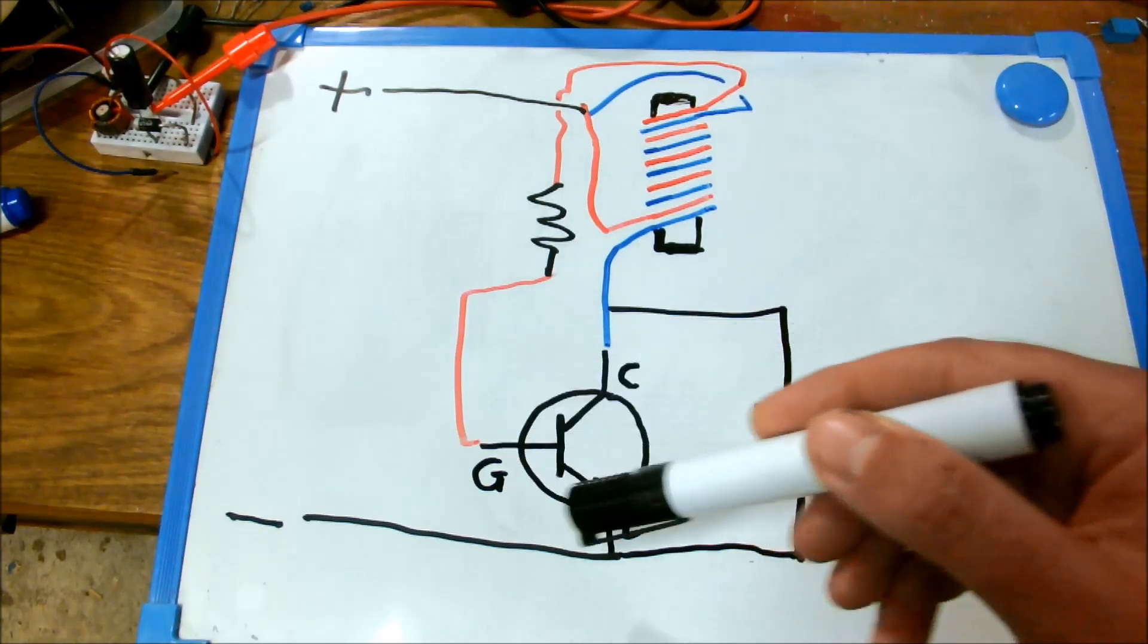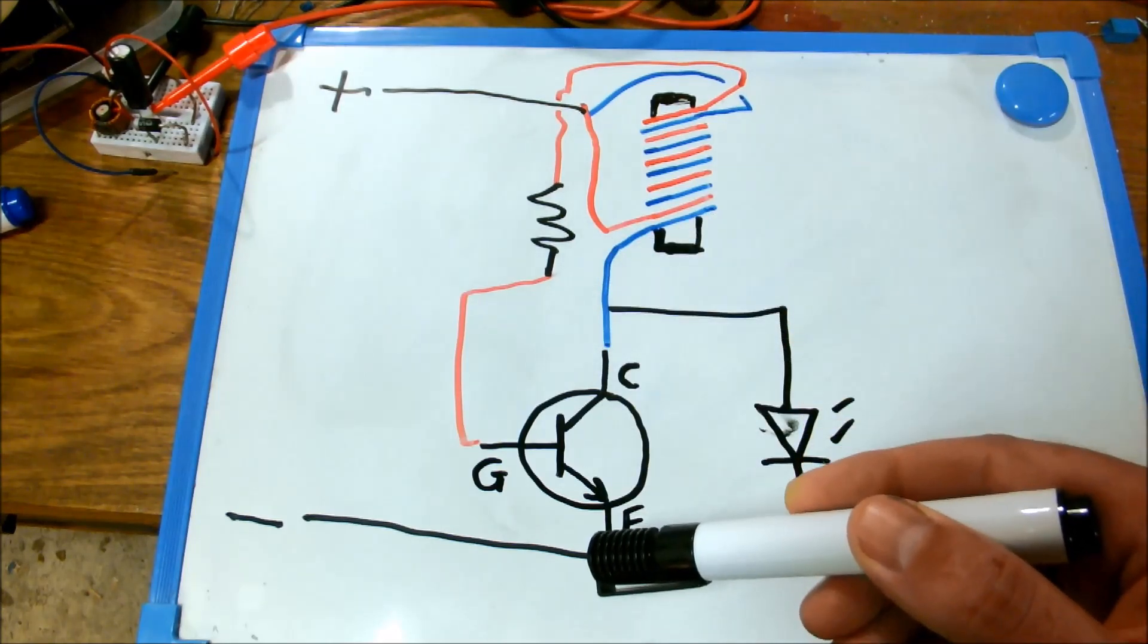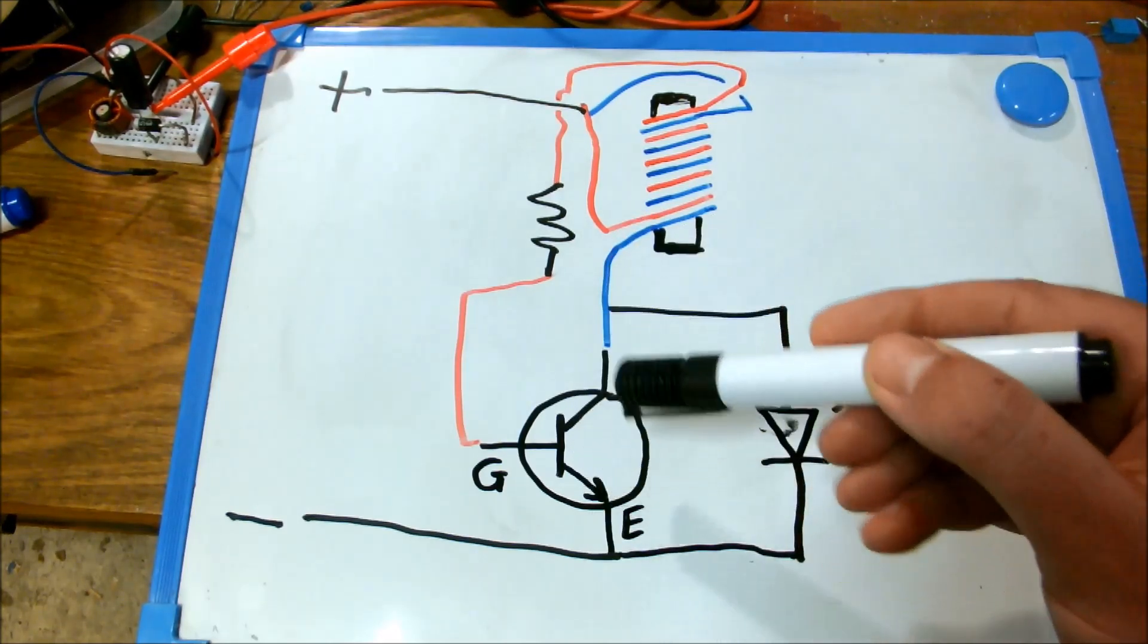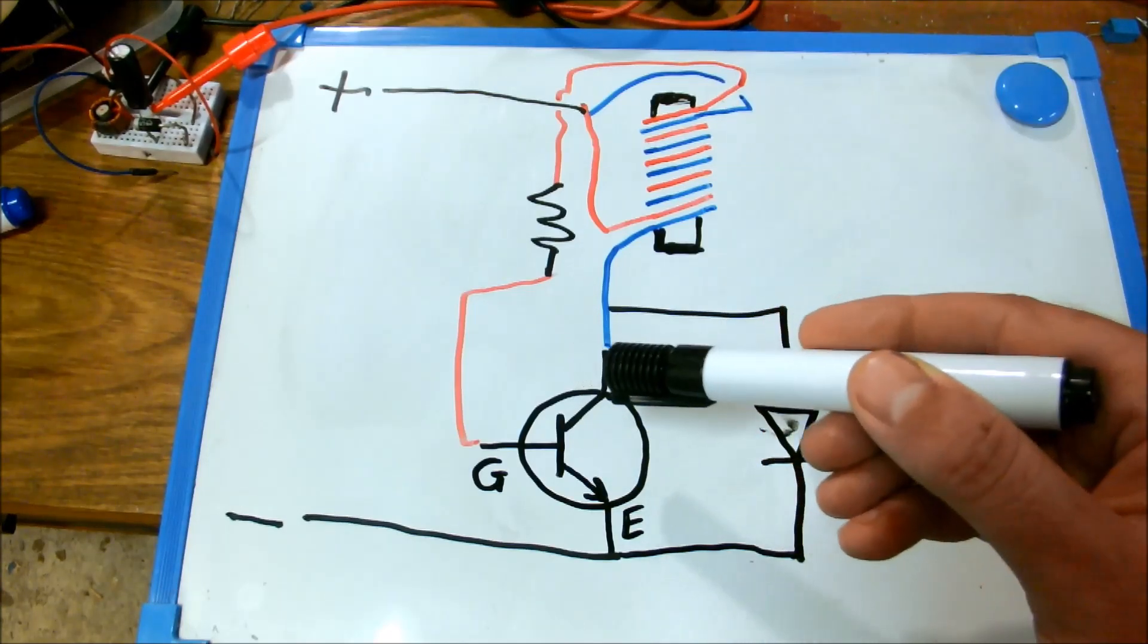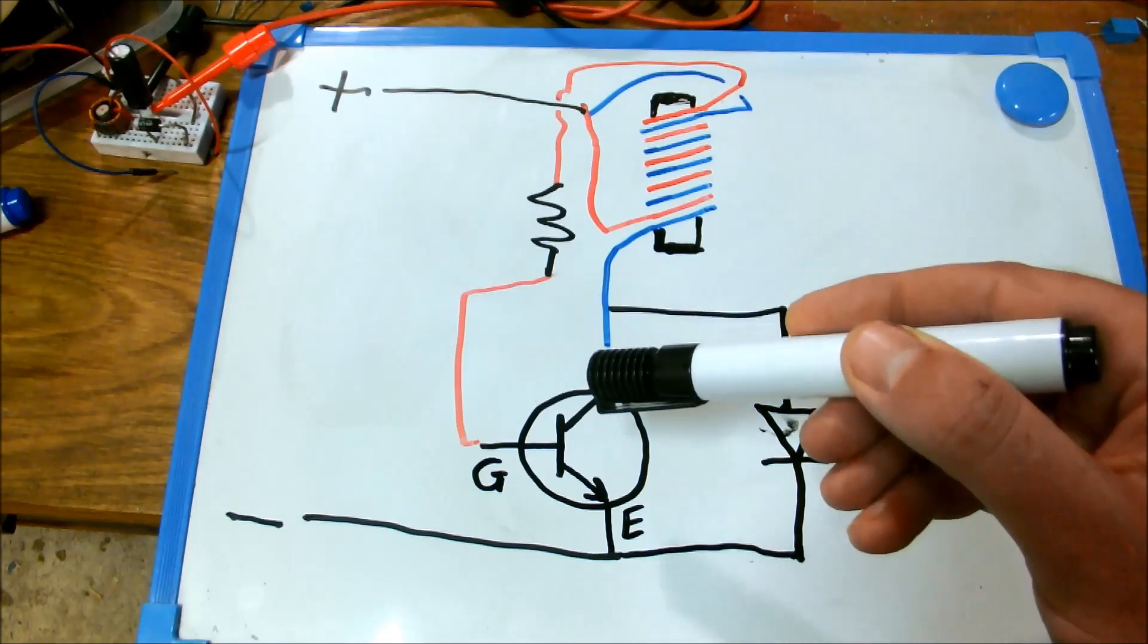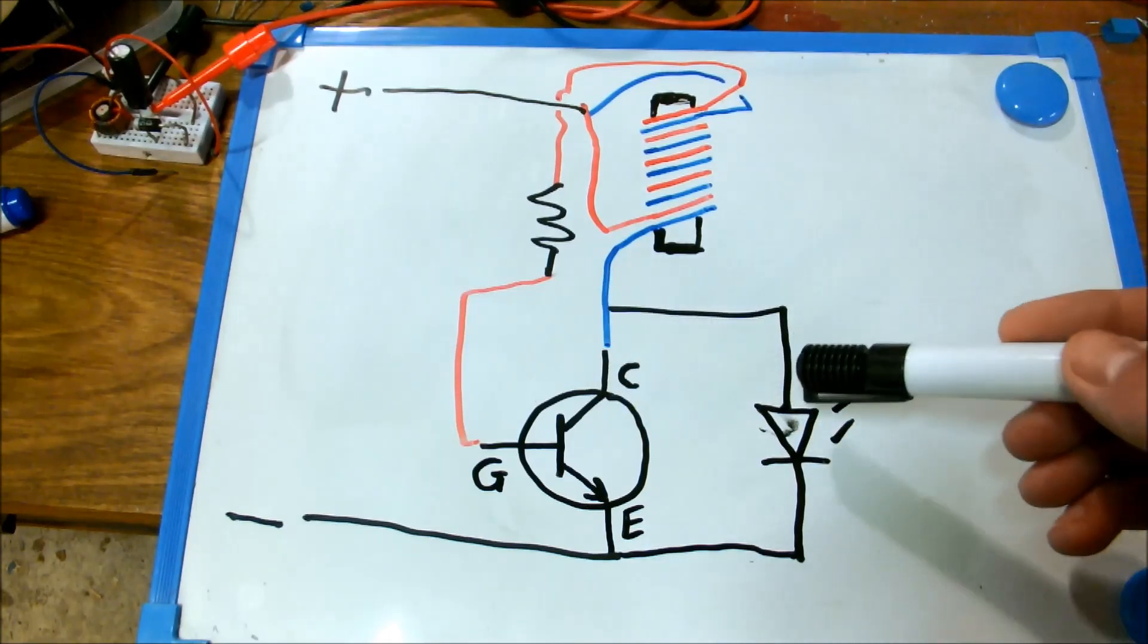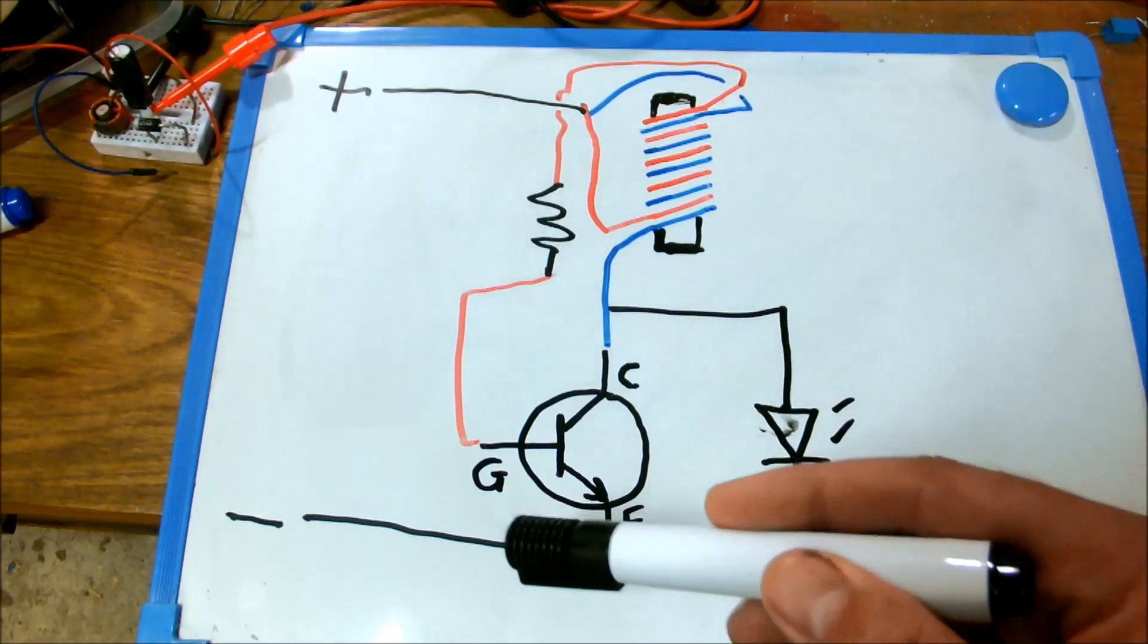Now when the transistor is open, that blue lead drains into the ground. This transistor then shuts down very quickly, which creates a voltage spike over there. So as soon as that voltage rises above the minimum required to activate this LED, the current then flows through the LED until the transistor opens up and the current drains through the transistor again.